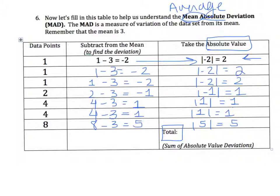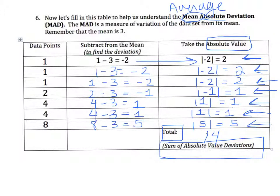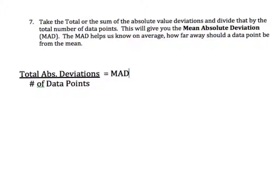I'm going to take two, plus two, plus two, plus one, plus one, plus one, plus five. And I find out that my total number of deviations is 14. This is the sum of those absolute value of your deviations. Now I need to take the total or sum of those absolute value deviations, which was 14, and divide that by the total number of data points. The total number of data points that I had were seven, which leaves me with two.